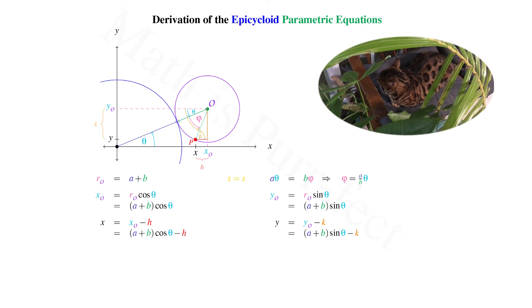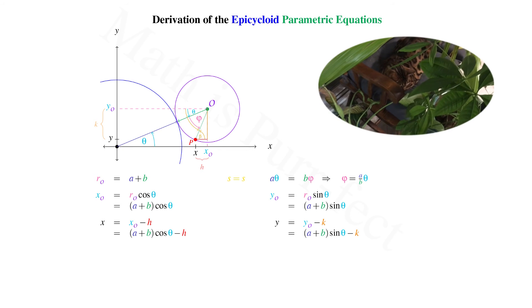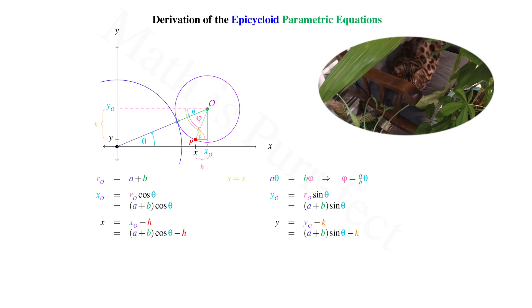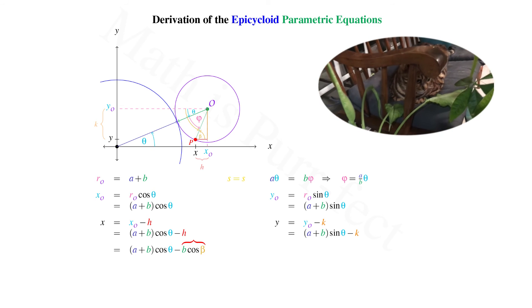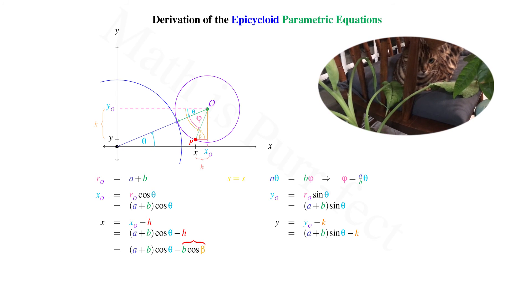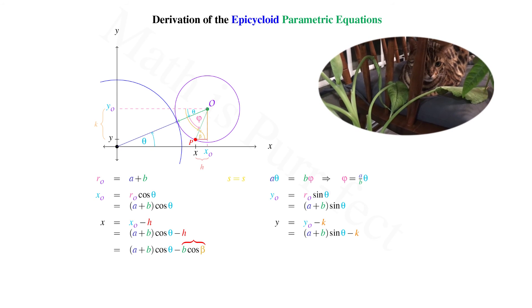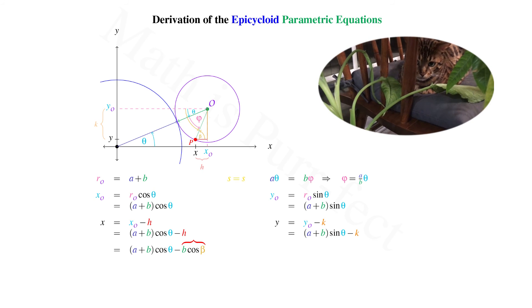But we can now express H and K using trigonometric functions. Recall that B is the length of radius OP. Hence X equals A plus B cosine theta minus B cosine beta, as H is adjacent to beta in the triangle.